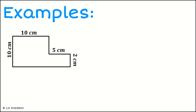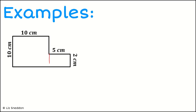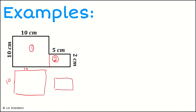Here's our first example. We've got an L-shape object and we want to find the area of it. We can break this area into two different shapes: area 1 and area 2. Area 1 is a square with sides of 10 centimetres by 10 centimetres, and area 2 is a rectangle with sides of 5 centimetres by 2 centimetres.